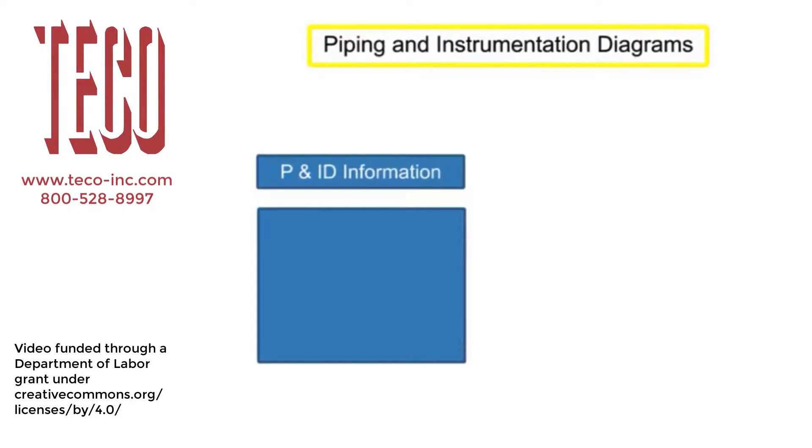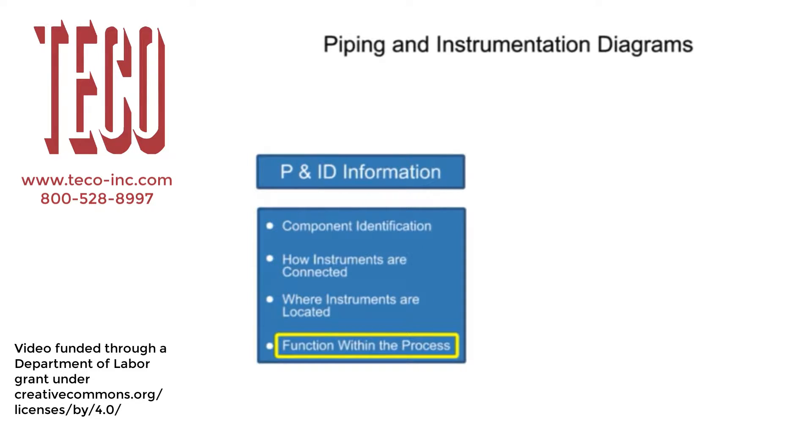Piping and instrumentation diagrams provide information that includes component identification, how instruments are connected, where instruments are located, and their function within a process.